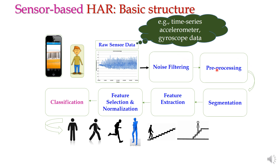The sensor-based HAR pipeline involves preprocessing and filtering of the raw sensor data, followed by segmentation — since in continuous sequences segmentation is difficult but necessary. Then feature extraction and feature selection or normalization, and finally classification. Feature extraction is the most critical part: extracting distinguishable, separable features from similar activities for machine learning approaches like SVMs, random forests, or CNN-based methods.